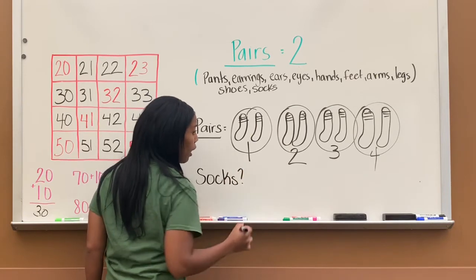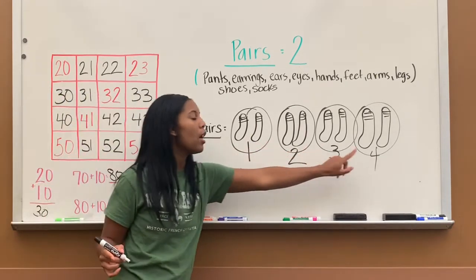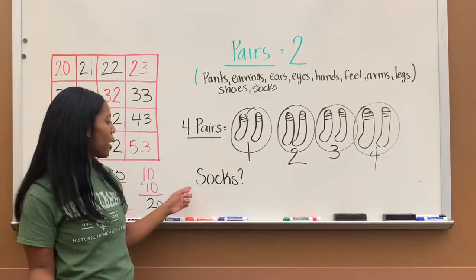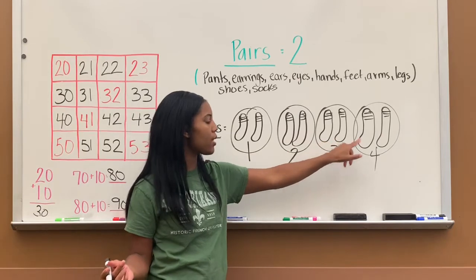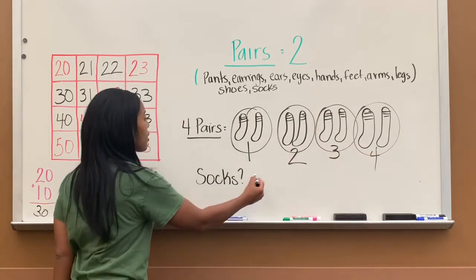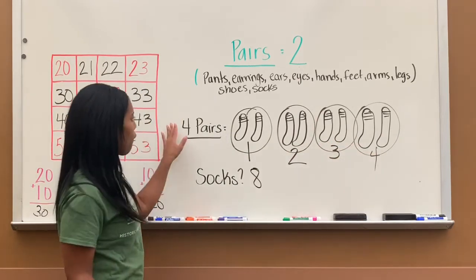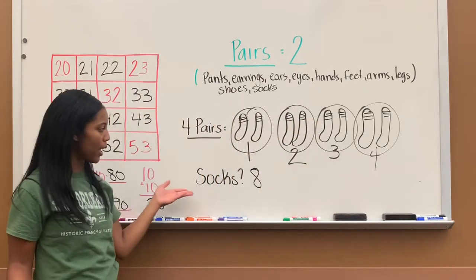When I'm asking how many socks, now you can count by ones. Pairs we count them in twos, but when I say how many socks, you count them by one. So that's one, two, three, four, five, six, seven, eight. So that was a total of eight socks. Four pairs makes eight socks.